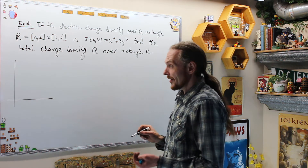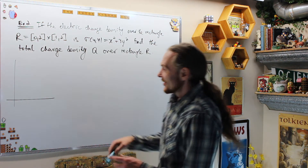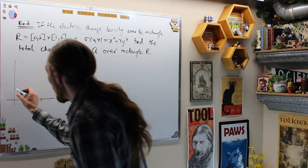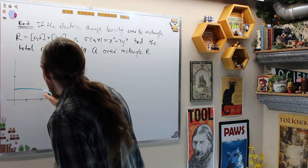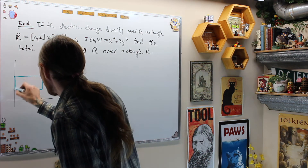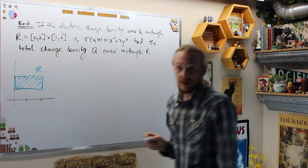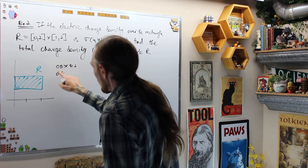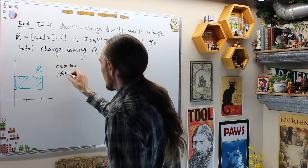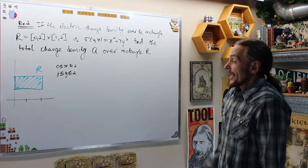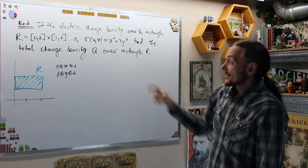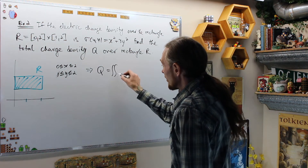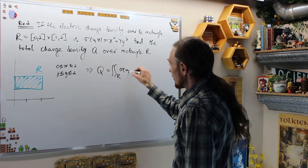It's a rectangular region: x goes from 0 to 2 and y goes from 1 to 2, so we have this rectangle. My region R says 0 ≤ x ≤ 2 and 1 ≤ y ≤ 2. My charge density is σ = x² + 3y², and the total charge over that region is the double integral over the rectangle of my charge density.